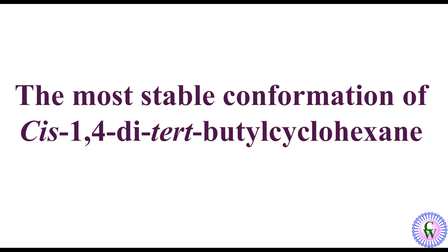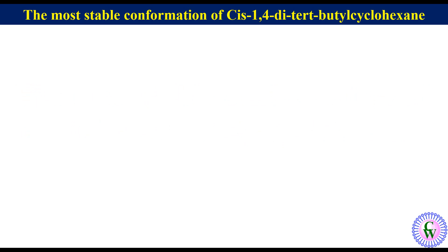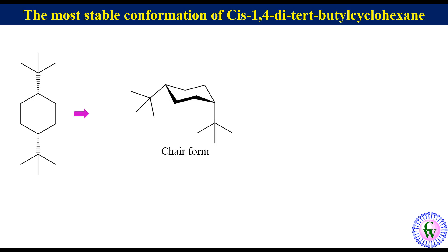Hello and welcome to my YouTube channel ChemViz. In this video we are going to discuss the most stable conformation of cis-1,4-di-tert-butyl cyclohexane. The planar structure of cis-1,4-di-tert-butyl cyclohexane can be drawn like this, where we can see that the two tert-butyl groups are on the same side. If we draw the chair conformation, it will look like this.